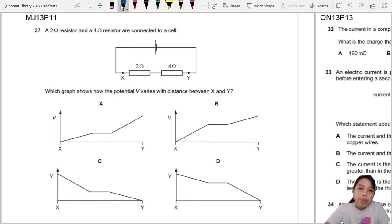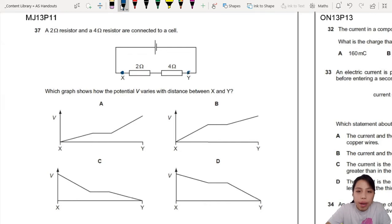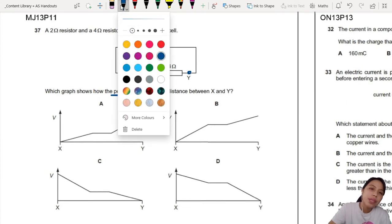Which graph shows how the potential varies between x and y? So x is this point here, y is over here. How does potential vary?